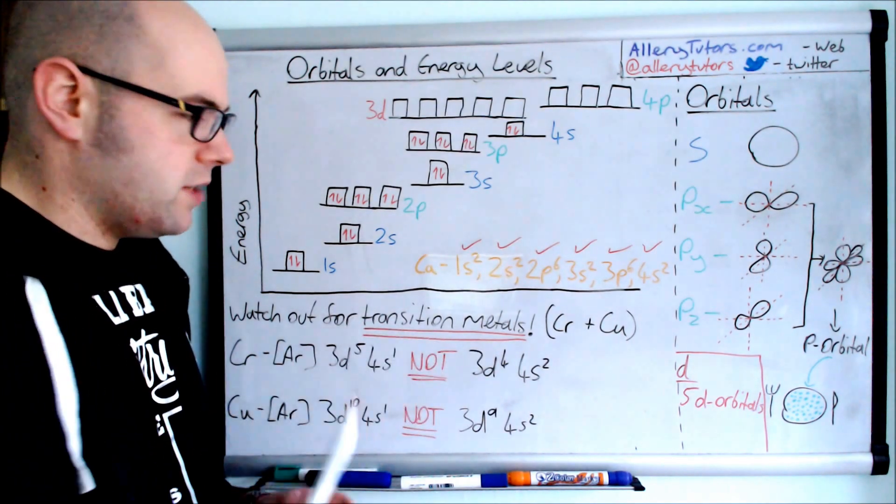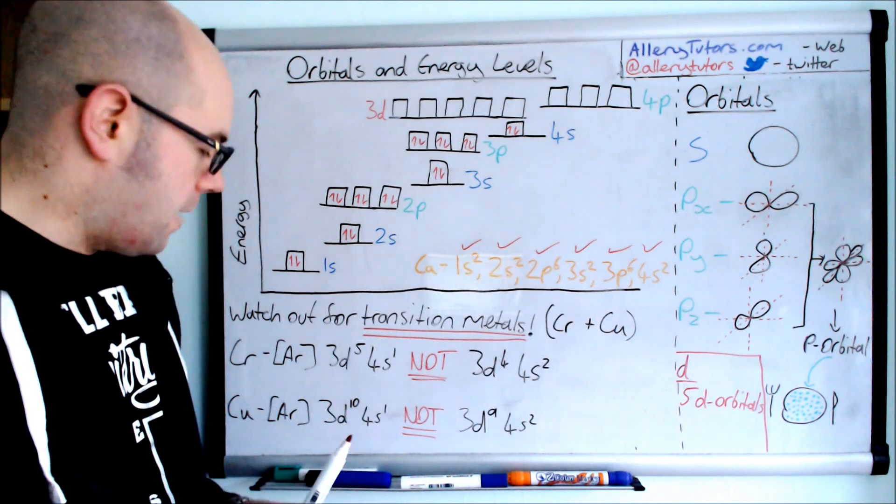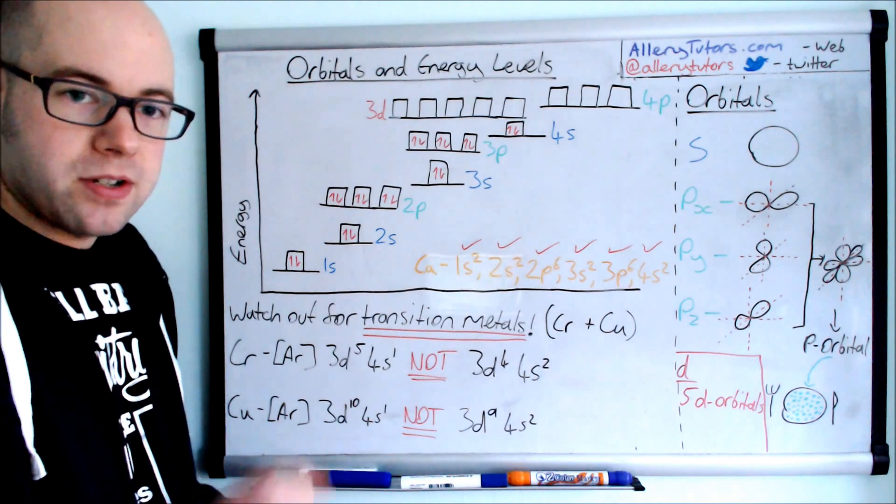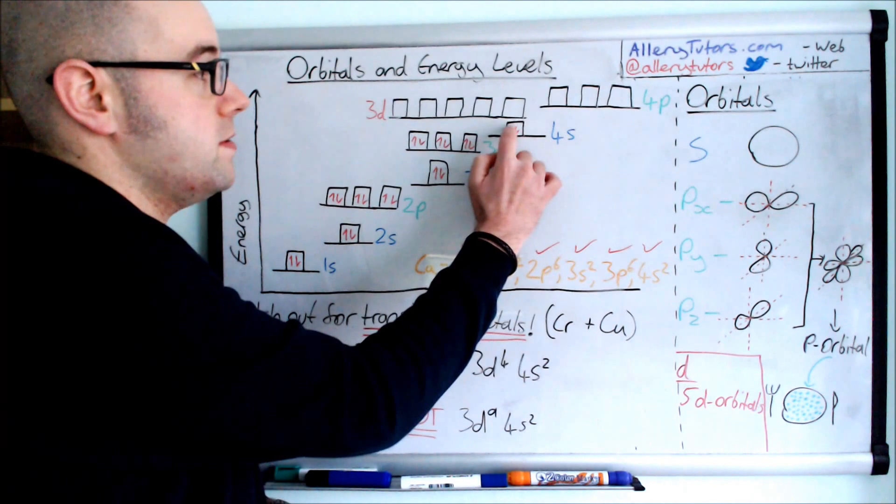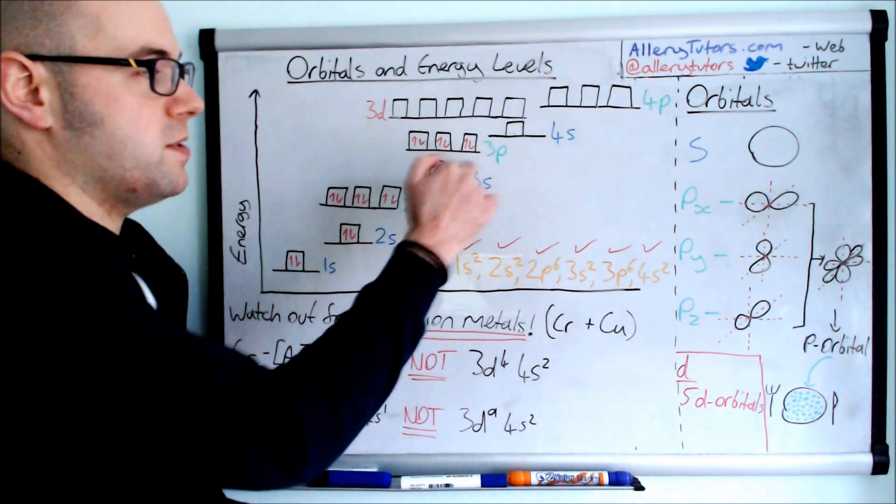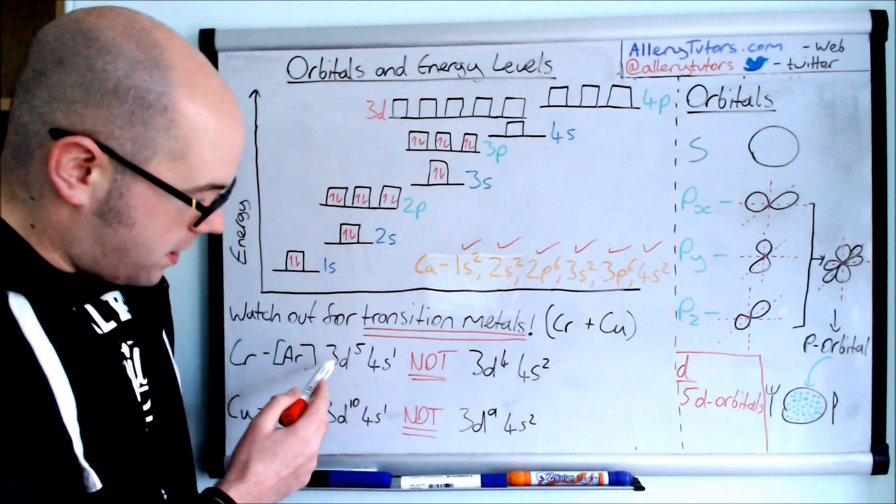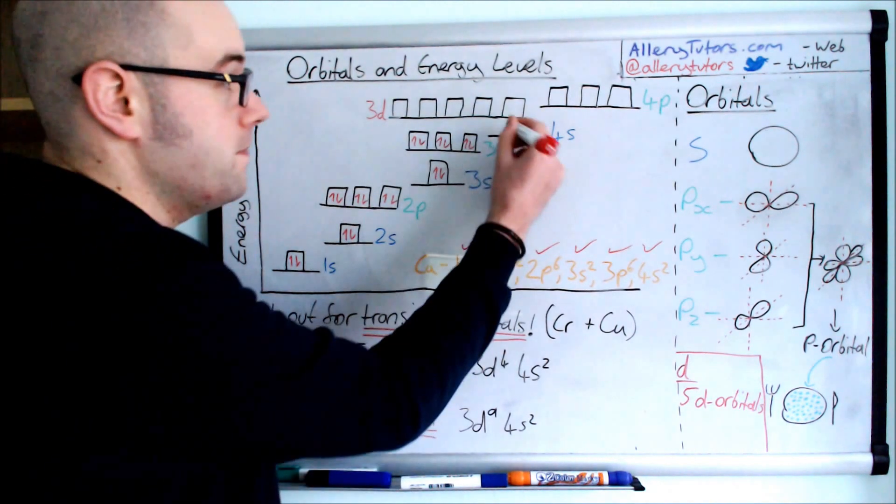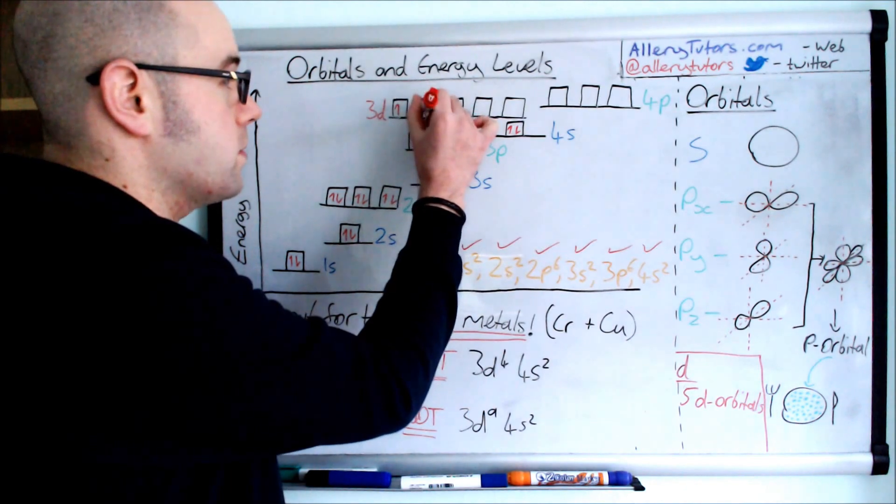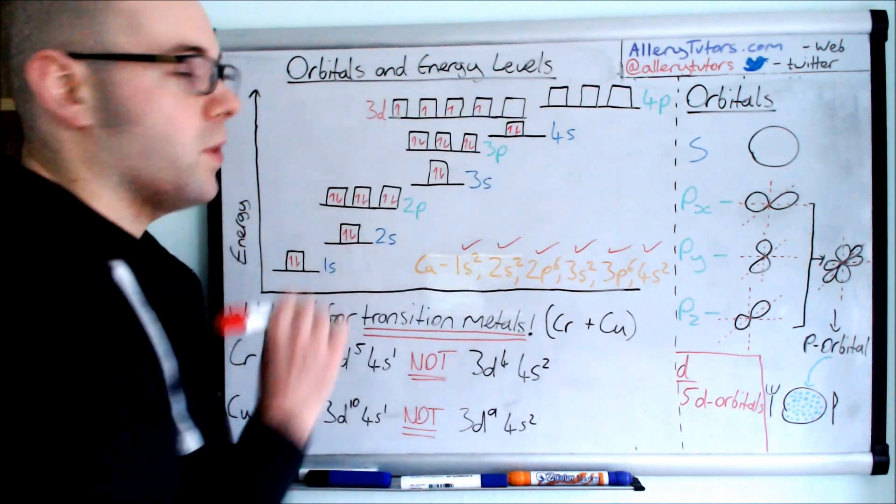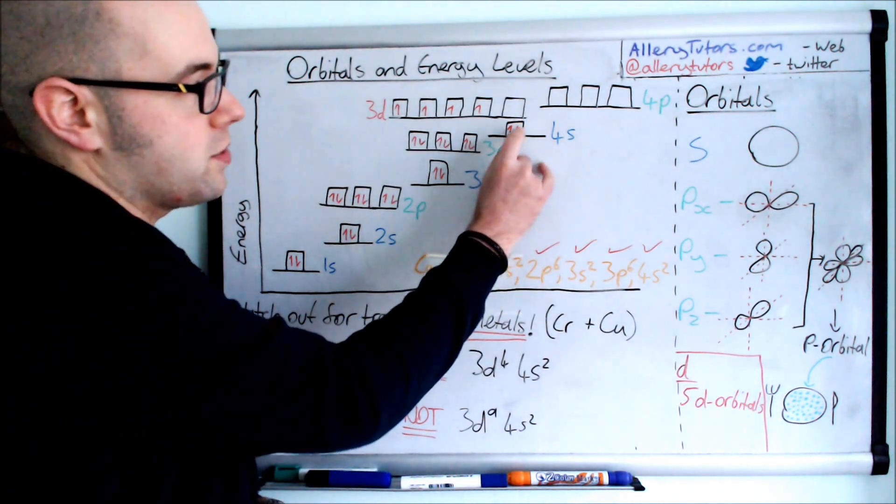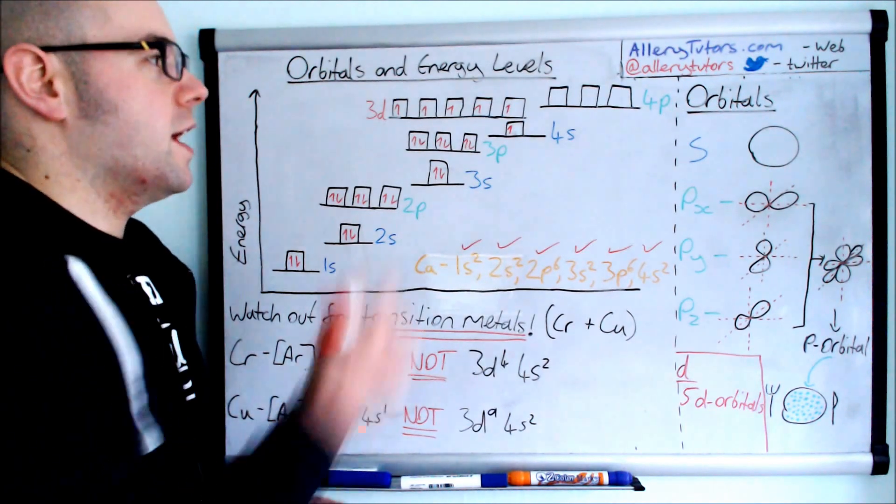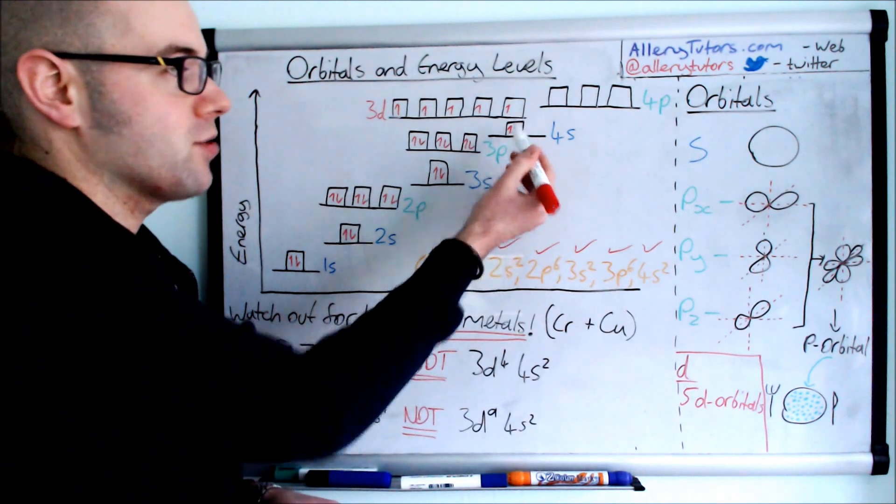We're going to finally look at the transition metals: chromium and copper. These are a little bit strange. Here's the electron configuration of chromium. We've written this as the electron configuration of the noble gas argon, which effectively means we have this configuration. If you look here, it should be 3d5, 4s1, and not 3d4, 4s2. What you would think is if we go along to chromium, if it follows this simple rule, it would fill up like this and you'd have four in there.